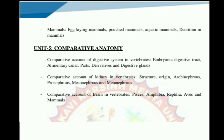Then we discuss the comparative account of kidney in vertebrates. Topics include structure, origin, archinephron, pronephron, mesonephron, and metanephron. And now we are going to discuss the last topic of the last unit: the comparative account of brain in vertebrates, studying comparisons across different classes: Pisces, Amphibia, Reptiles, Aves, and Mammals.